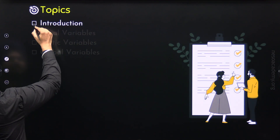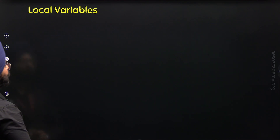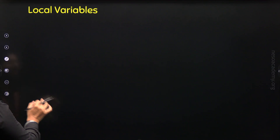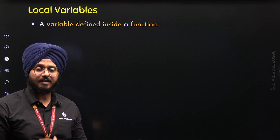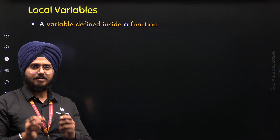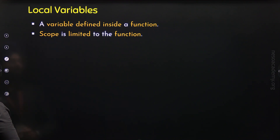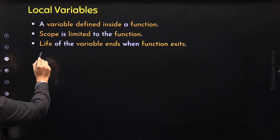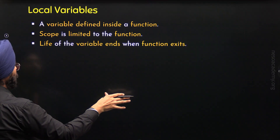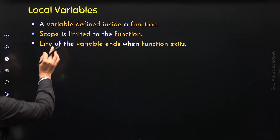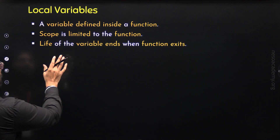A local variable is a variable which is defined inside a function. It is considered local to that function, which is why it is called a local variable. The scope of the local variable is limited to the function, and the life of the local variable ends when the function exits — when the function completes its execution, the variable gets destroyed.